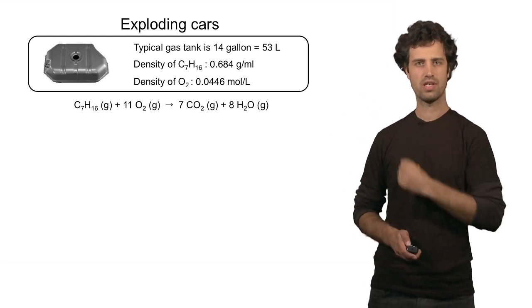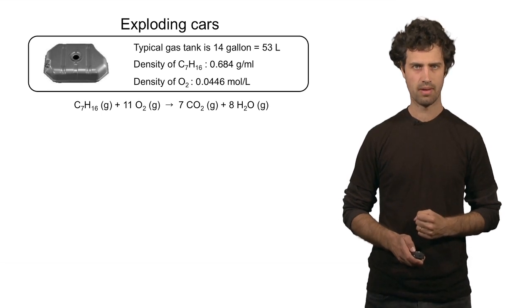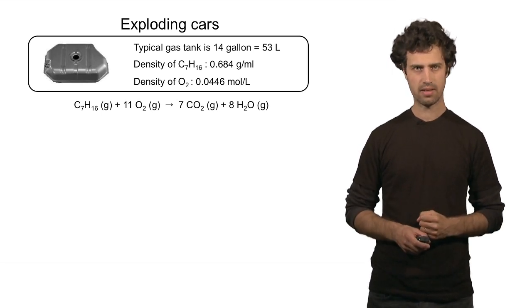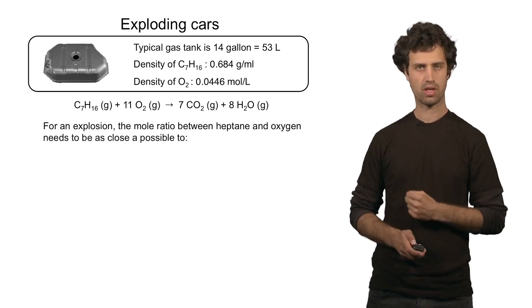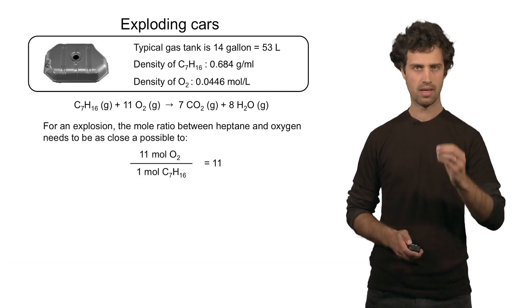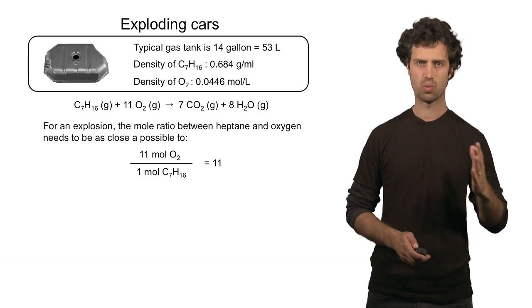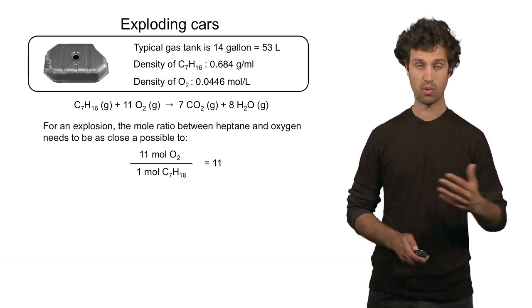Here is the reaction once again. What are the proportions that I need for the reaction to be complete? If you look at the chemical equation, you will find that you need 11 moles of oxygen for each one mole of heptane, so the mole ratio is 11.